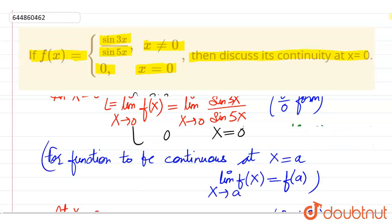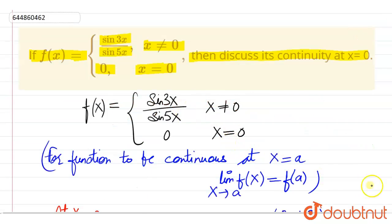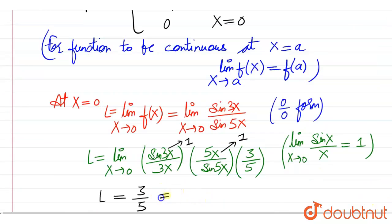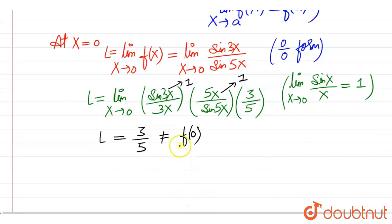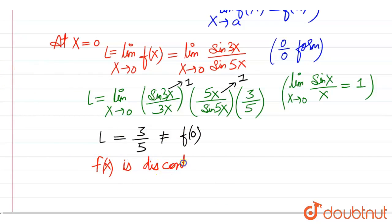But the value of the function at x equal to 0 is 0, which is not equal to f of 0. The limit 3/5 is not equal to the function value 0, so we can say that f of x is discontinuous at x equal to 0. Thank you.